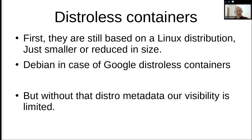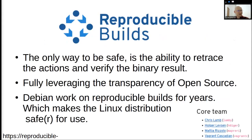Don't forget that the base image for whatever you use is like giving someone root access on your machine. If someone brings a malicious binary executable to your build system, they might inject a lot of stuff into your software that you build in that container. One of the solutions we have is reproducible builds. From my perspective, this is the only way to be safe — having the ability to retrace the actions and verify the binary results. If I can do the same process as you and get the exact same results, I know your system isn't compromised. Whatever you say or claim you do, you actually do — because I can trace that. That's the real way of fully leveraging the transparency of open source.